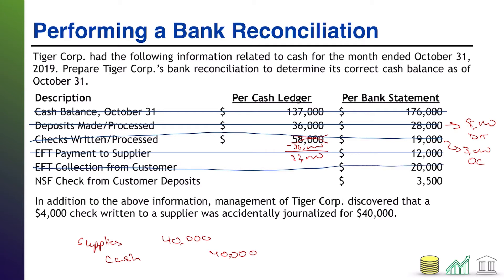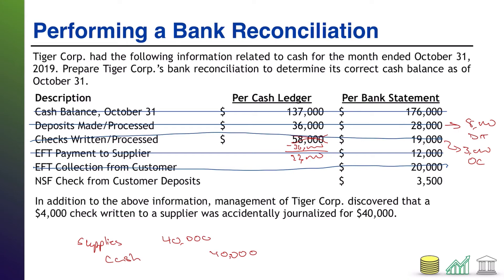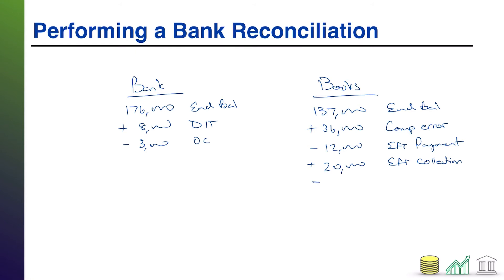The final piece of information is an NSF check from customer deposits. Our checks received from customers that we deposited contained $3,500 worth of NSF — non-sufficient funds — checks; in other words, they bounced. We thought the customers paid us, we deposited it, and the bank denied the checks because the customers didn't have enough money. We have to take that $3,500 back out of our cash because we originally debited cash when the customer paid us, and now it turns out the customer didn't really pay us.